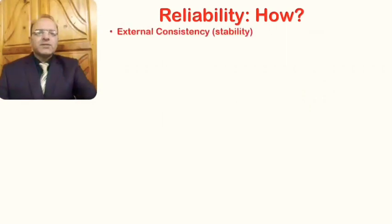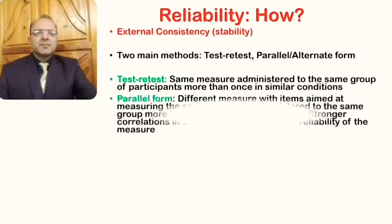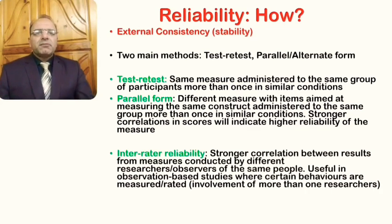Internal consistency is generally measured through the split-half method, with the two main approaches being the Kuder-Richardson method and Cronbach's alpha. Moving on to external reliability, also called stability — there are two main methods for finding external consistency: the test-retest method and the parallel or alternate form method.